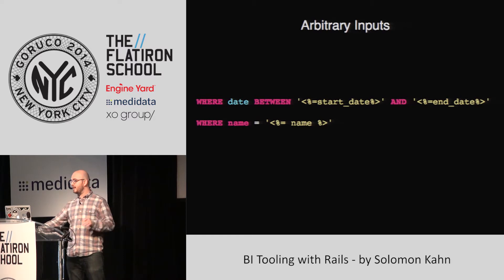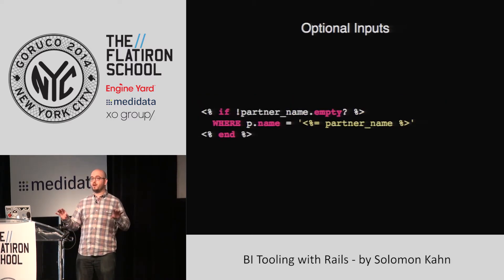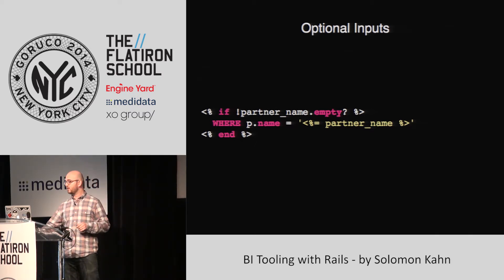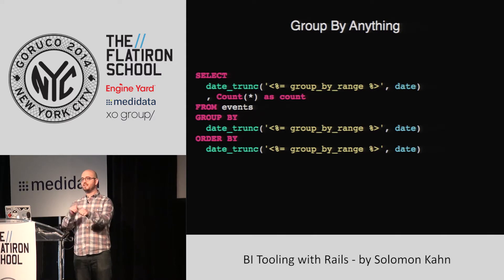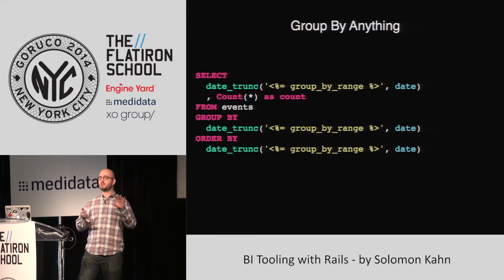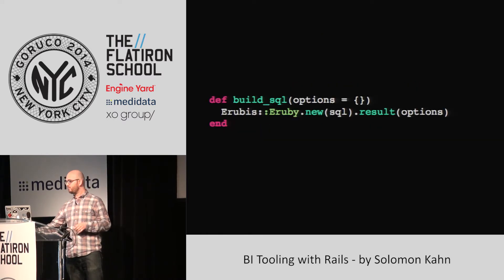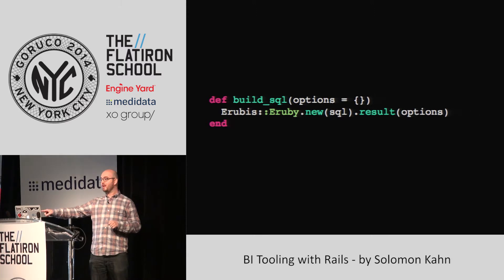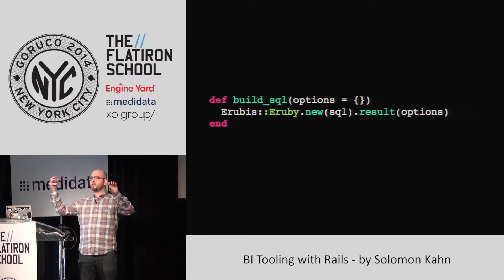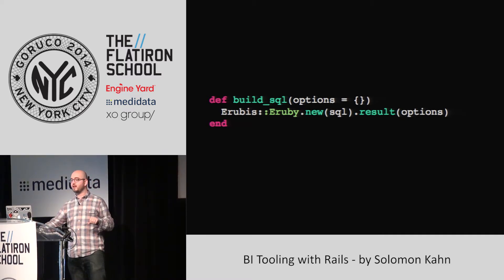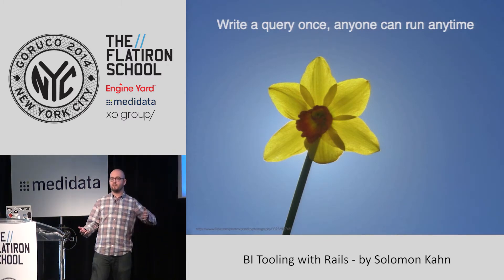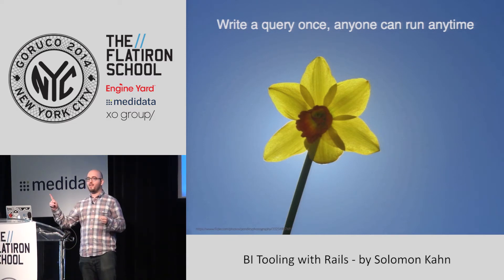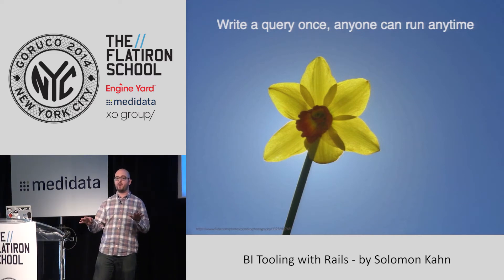You could have it for any name or any input. You could have optional inputs — optional WHERE clauses to filter things when people want, or not if they don't. You can also write the same query and have it grouped by anything: day, week, month, quarter, year using a Postgres function. You've taken the same data and opened up a whole new possibility for how you can deliver it to non-technical people. It's all just one line of code that takes the SQL template, combines it with user-inputtable options, and gives you a fully formed SQL string to execute. A developer only needs to write a query once, and then any person in the entire company can run that query any time they want for any parameters.